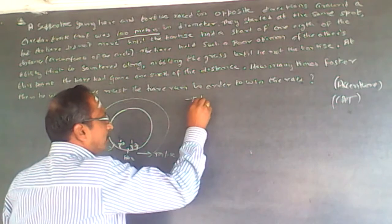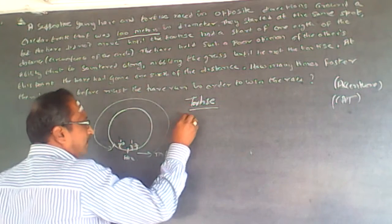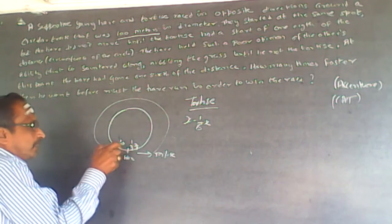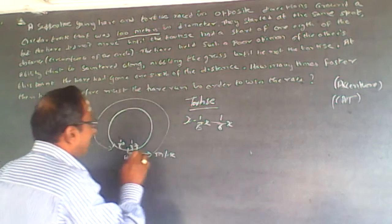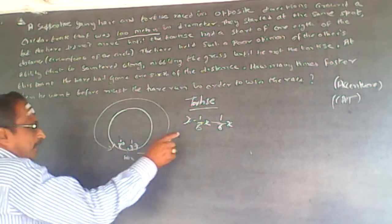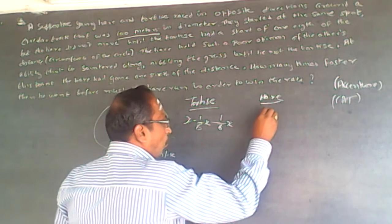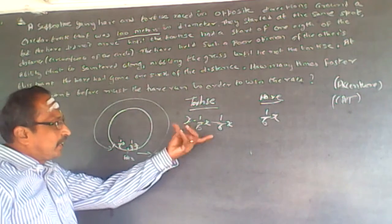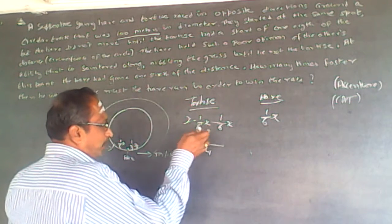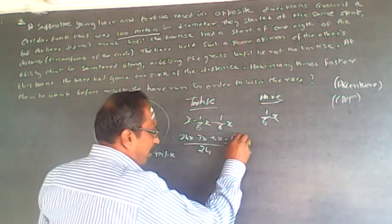So the tortoise is still running. The tortoise had already run x/8, so the remaining distance it covered from start until they meet is x minus x/8. At the meeting point it still has x/6 left to go, so the distance it has covered from the start is x minus x/8 minus x/6. Working this out with a common denominator of 24, we get: 24x minus 3x minus 4x, which equals 17x/24. So the tortoise has moved 17x/24, and the hare has moved x/6 — both in the same time period.